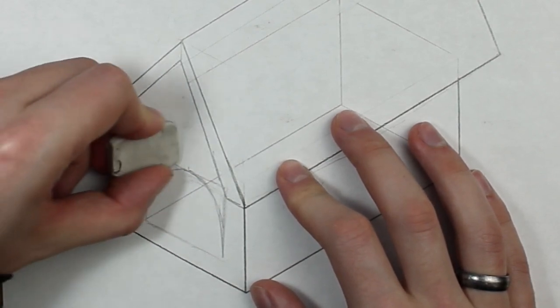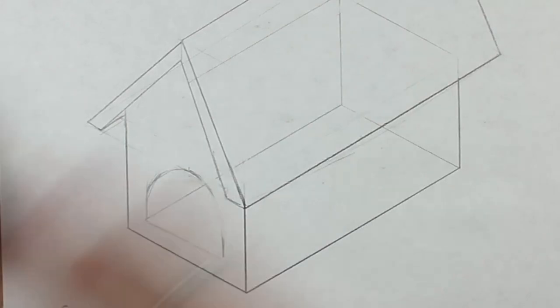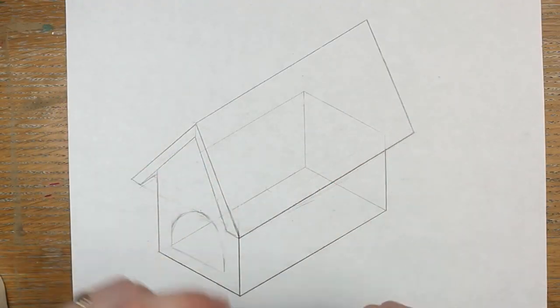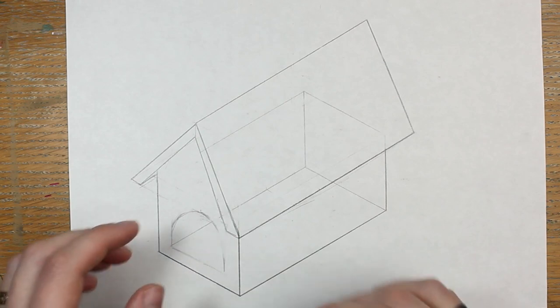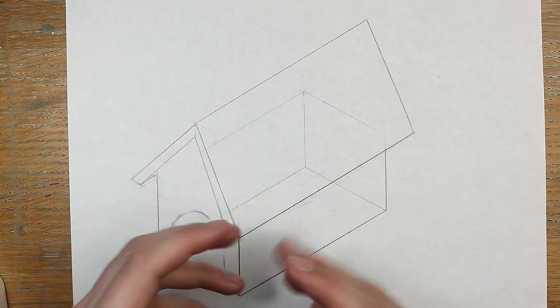You can use this technique for any curve. Remember, these construction lines are there to help you, and use them as you need. Okay, I think my isometric house is looking okay so far, but I think it could be a little bit better. We've done some diagonal lines, we've done some curves, and I think it's time we try some circles now. So I'm going to add a chimney.